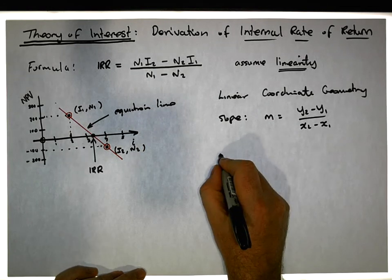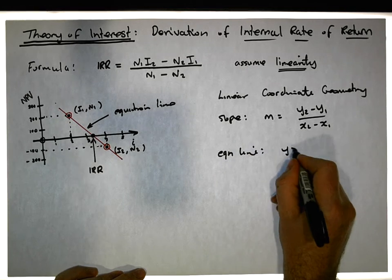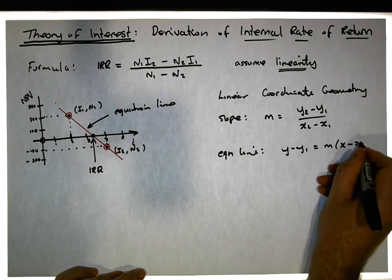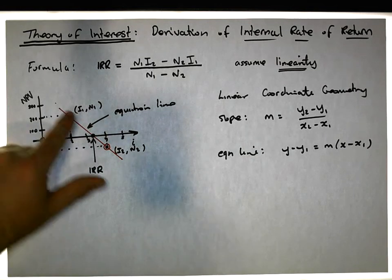And then given a point and a slope, we can actually calculate the line itself. So the equation of the line is given by y minus y1 is equal to m times x minus x1.